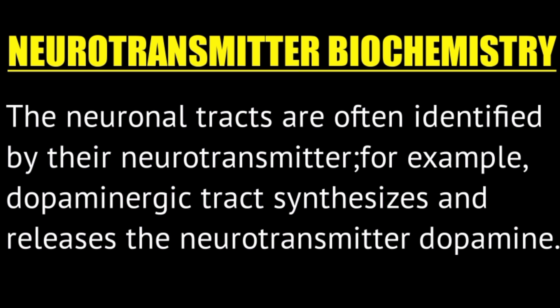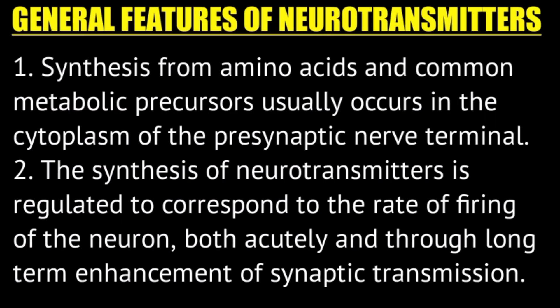Neural tracts are identified by their neurotransmitters. For example, a dopaminergic tract synthesizes and releases the neurotransmitter dopamine — it is called a dopaminergic tract because that collection of nerve axons synthesizes and releases dopamine.